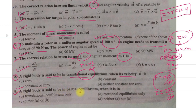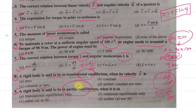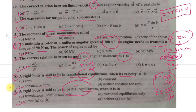For the ninth question, a rigid body is said to be in partial equilibrium when it is only in rotational equilibrium but not translational equilibrium, or only in translational equilibrium but not rotational equilibrium. Option C is the correct answer — either A or B can apply. Both conditions — only translational or only rotational equilibrium — represent partial equilibrium. Thank you very much.